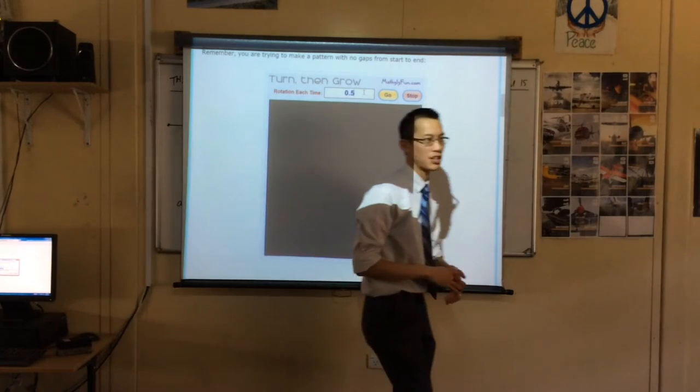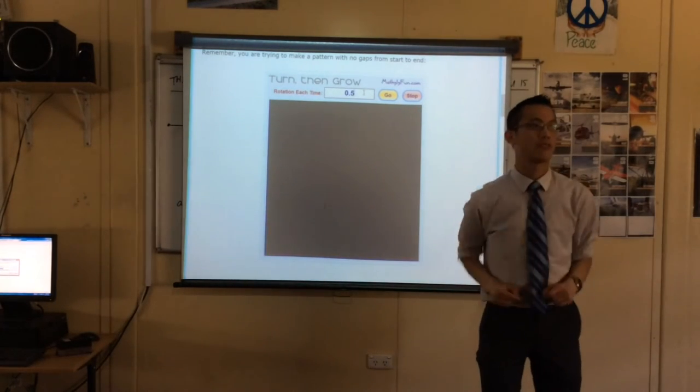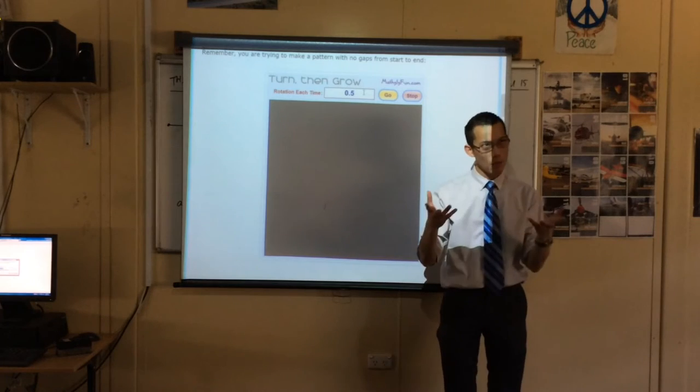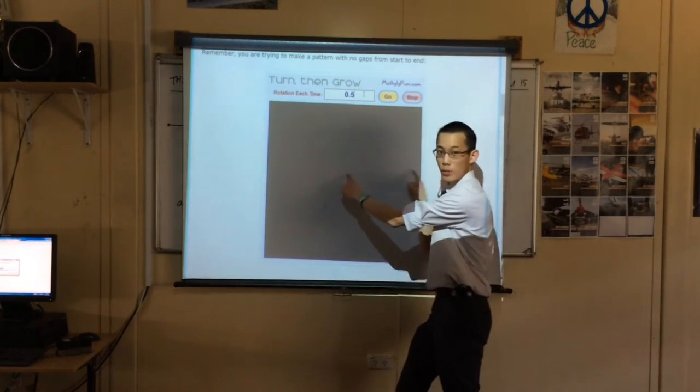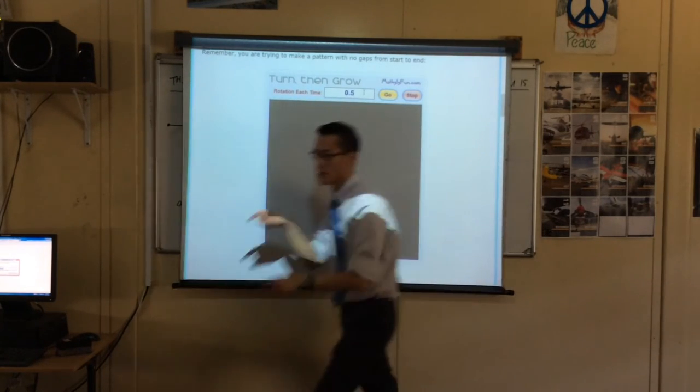Now, imagine for me, before I press go, it's going to send out a cell, rotate halfway around the circle, and send out another cell. Then rotate another halfway around, and send out another cell, and on and on. What do you predict will happen before I say go?